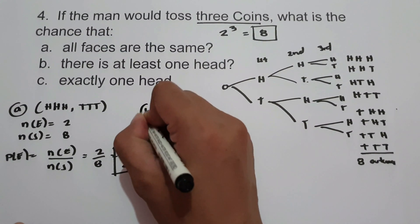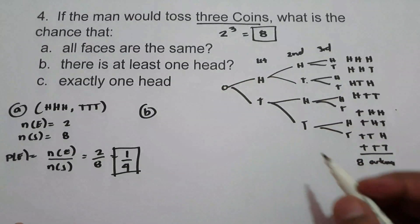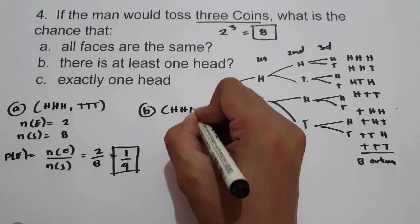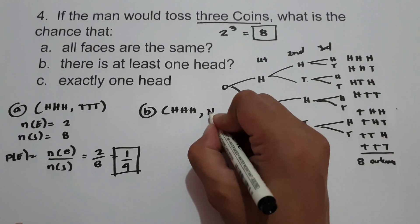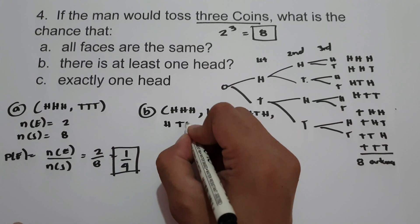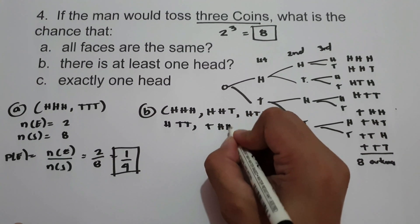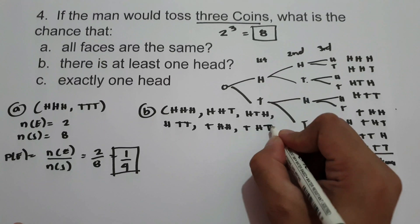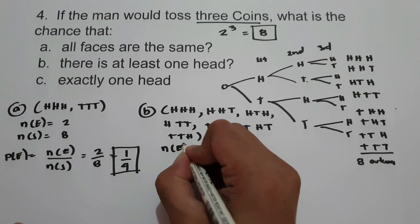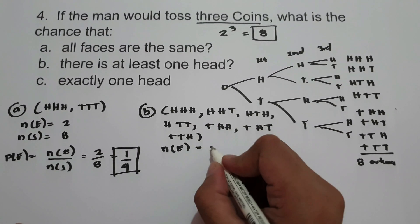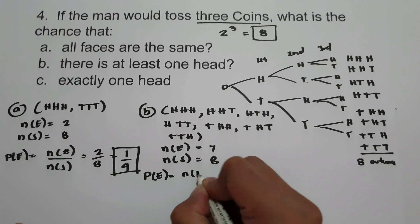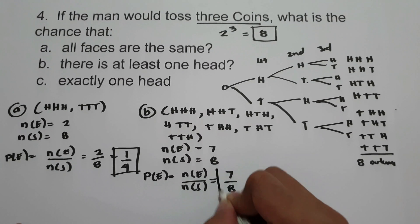On letter B, at least one head — the outcomes with at least one head are: HHH, HHT, HTH, HTT, THH, THT, and TTH. The number of favorable outcomes is 7, and the total number of outcomes is 8. So the probability is 7 over 8.